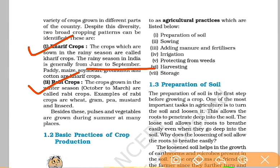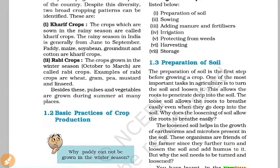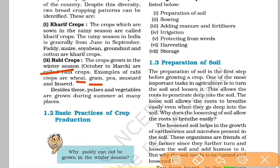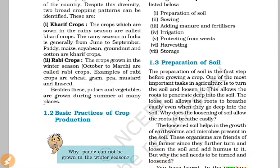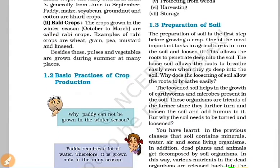Kharif crops include rice, godhume, soya bean, paddy, and cotton. These are Kharif crops grown in the rainy season. Next, we have Rabi crops, grown in the winter season from October to March. Examples include wheat, gram, peas, chickpeas, and linseed. These crops produce oil. So next we have basic agricultural practices.